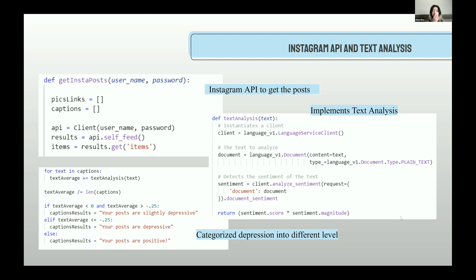In order to determine whether the input captions are depressive, the program includes a text analysis function defined with a parameter text which receives the passed-in caption. The text sentiment analysis is dependent on Google Cloud Language V1 package. The program first instantiates a client through the language service client function, then passes the caption input to the document function. The program detects the sentiment of the caption using the analyze sentiment function. The sentiment variable stores score and magnitude. The document magnitude shows how much emotional content it contains, which is significant when analyzing documents with a neutral score. The function returns the sentiment score multiplied by the magnitude as a result.